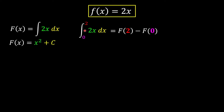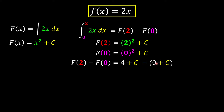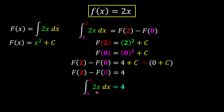We substitute our upper limit of 2 and lower limit of 0 into the indefinite integral, then find the difference. Notice that C cancels out — C minus C is nothing — so for definite integrals we can skip writing plus C. After computing, we get 4 as our answer. So the integration of 2x from 0 to 2 is 4.